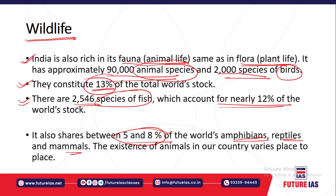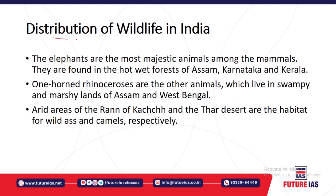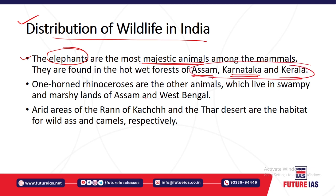Adaptability and suitability to a particular environment is the most important parameter related to wildlife. Regarding the distribution of wildlife in India: elephants are the most majestic mammals and are found specifically in the forests of Assam, Karnataka, and Kerala — the three states with highest elephant density. The one-horned rhinoceros is found in the swampy and marshy regions mainly in Assam and West Bengal.